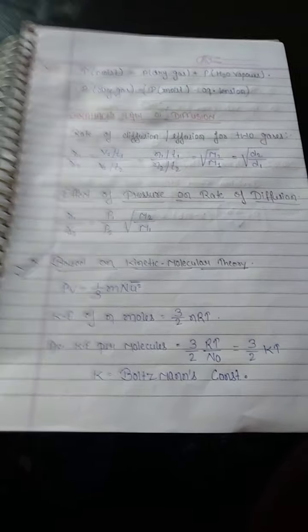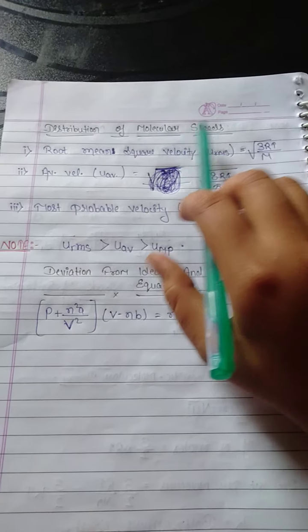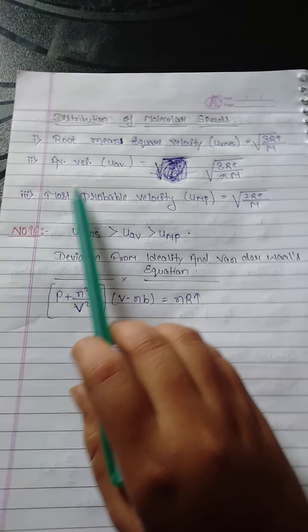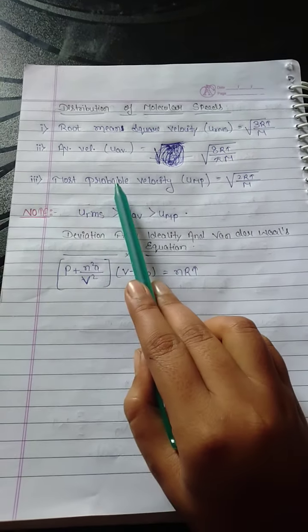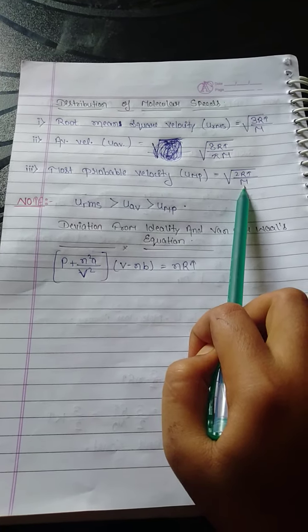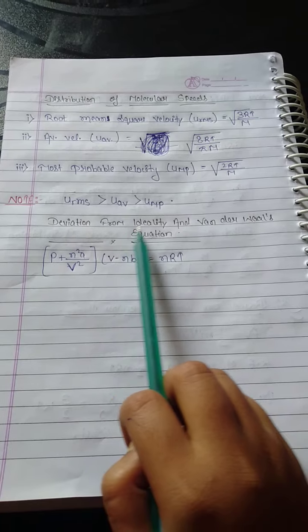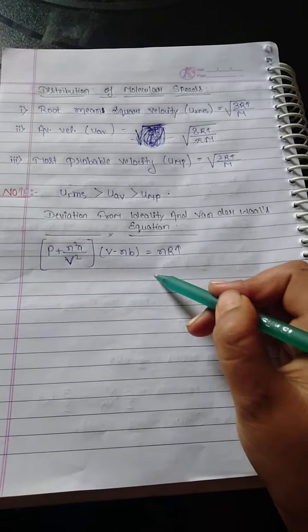Based on kinetic molecular theory, this is very important. Now here distribution of molecular speed: root mean square velocity is this, average velocity is this, and most probable velocity is equal to this. This is the sequence. And deviation from ideal and Van der Waals equation. This is very important, please remember this.